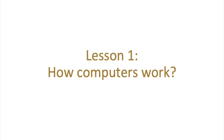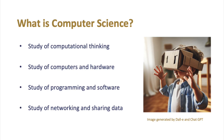Let's start by looking at what computer science actually is. If you ask most people, they'll simply say it's the study of computers, and that's not entirely inaccurate. However, as a computer scientist you need to know a lot more. Computer science is the study of computational thinking, which is an approach to solving problems. It's the study of computers and hardware — devices and parts we can physically touch. It's the study of programming and software — code and instructions we write to control that hardware — and it's the study of networking and sharing in this digital age.